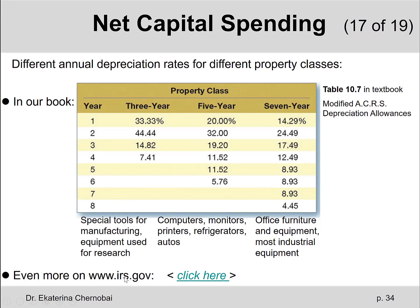On the IRS.gov website, you can find many more different types of property classes, but we are not going that deep into this topic. In this chapter, we will only be referring to table 10.7 in the textbook, which summarizes the percentage of the original value that is lost every year.